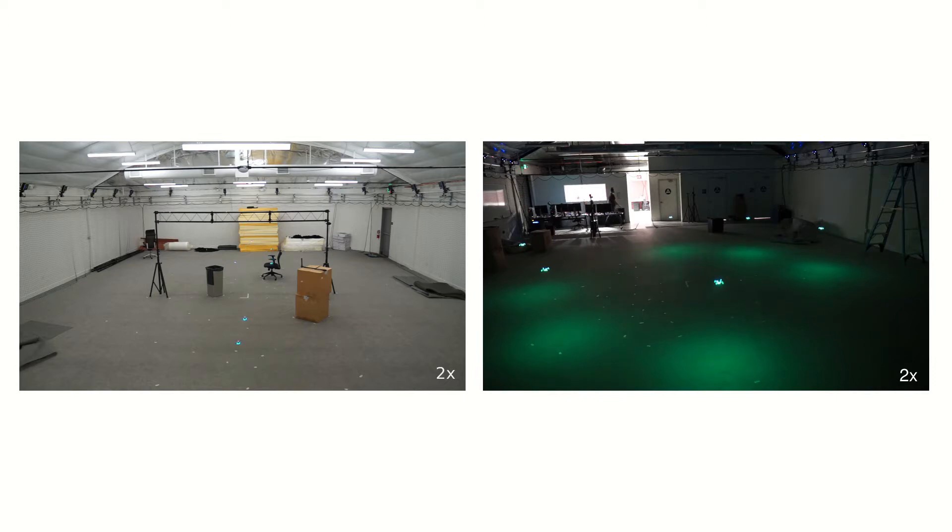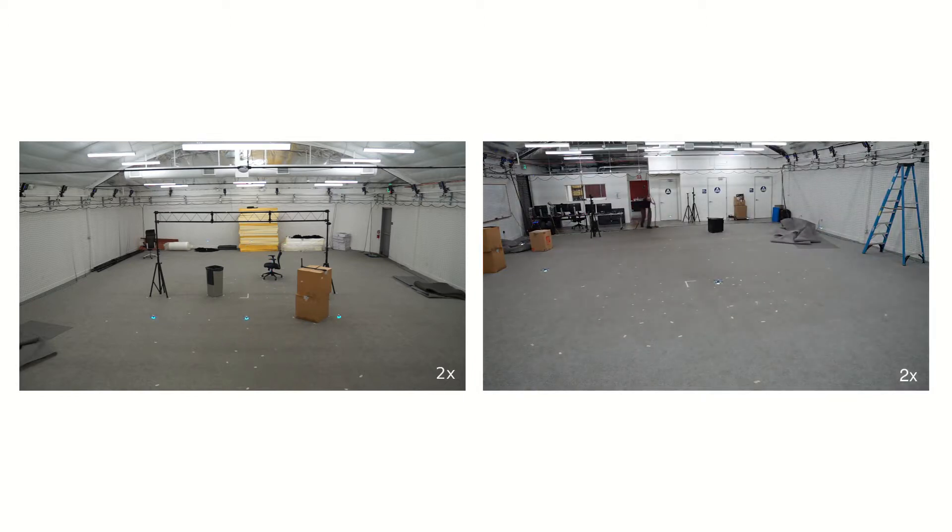Robots successfully avoid each other and obstacles and navigate to their goal positions. A human disturbs robots during flight to show that planning is done in real time.